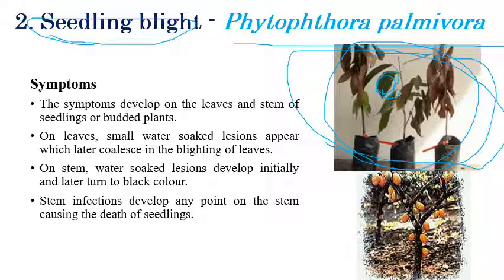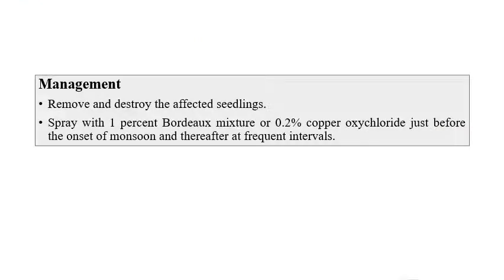Water-soaked lesions are not only seen on leaves but also on the stem. On the stem, water-soaked lesions slowly turn black — initially light brown or dark brown, eventually becoming black. For management: remove and destroy affected seedlings, and spray 1% Bordeaux mixture or 0.12% copper oxychloride before the onset of monsoon at frequent intervals.